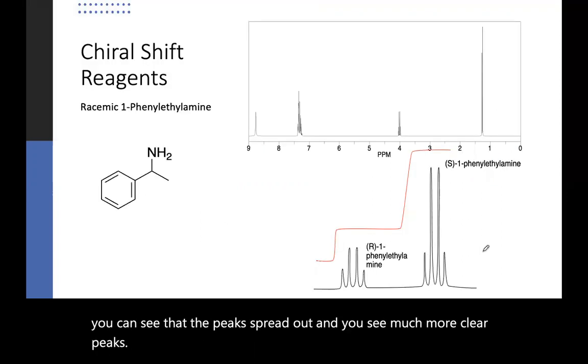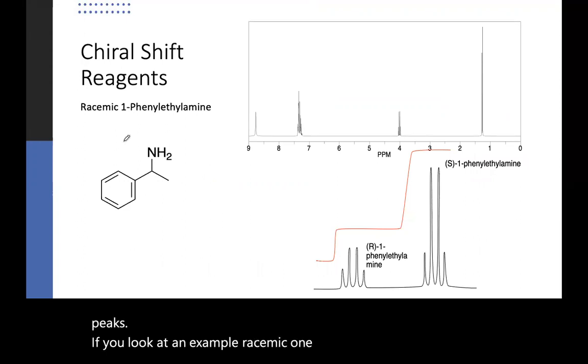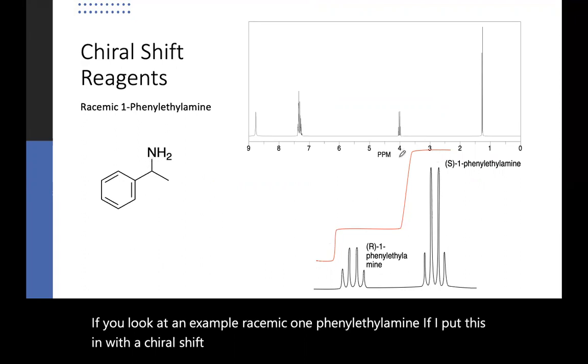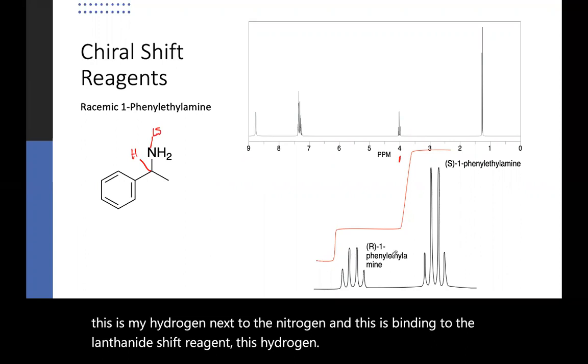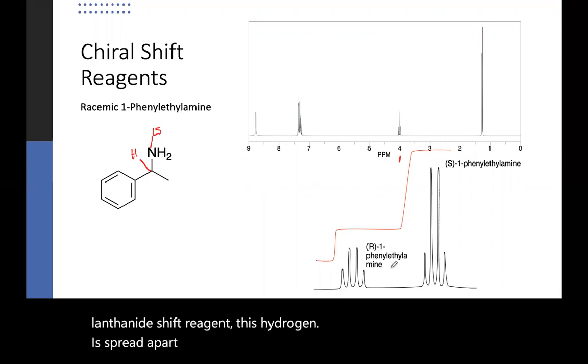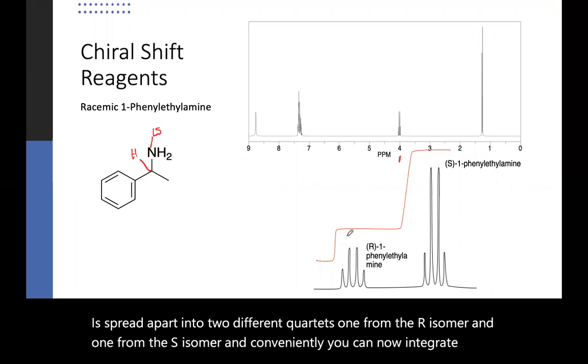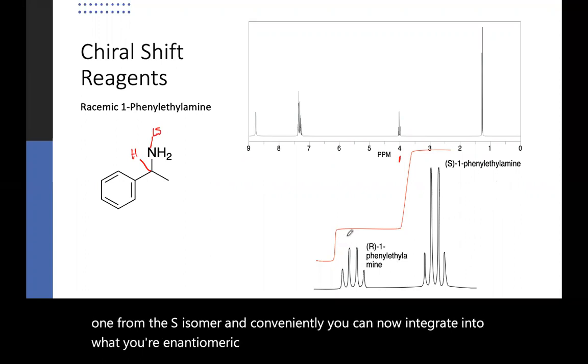If you look at an example, racemic 1-phenyl ethyl amine, if I put this in with a chiral shift reagent and then I look at this peak here at 4, this is my hydrogen next to the nitrogen and this is binding to the lanthanide shift reagent. This hydrogen is spread apart into two different quartets, one from the R isomer and one from the S isomer. And conveniently you can now integrate into what your enantiomeric excess is or how much of the R to the S you have.